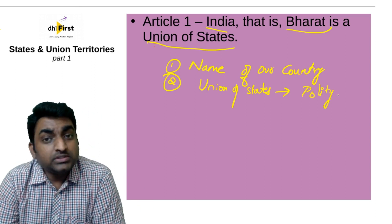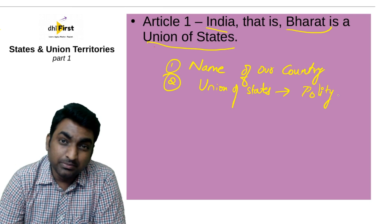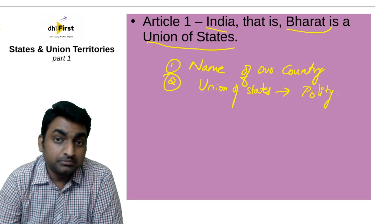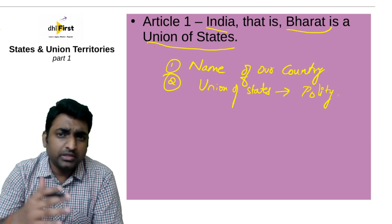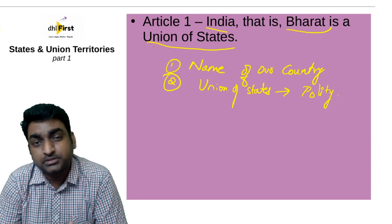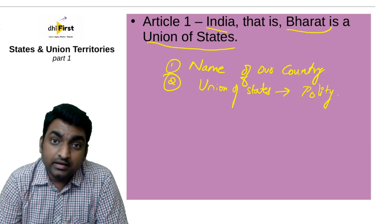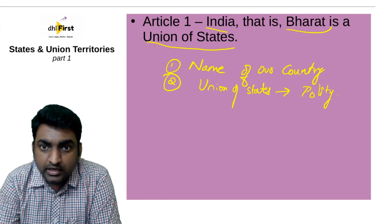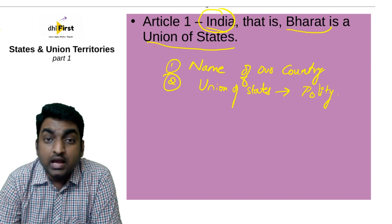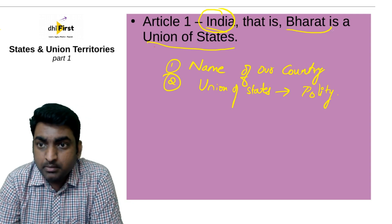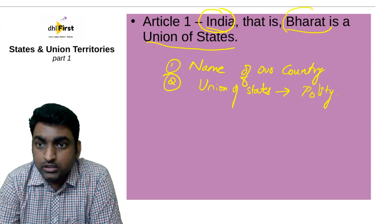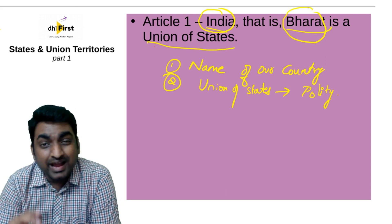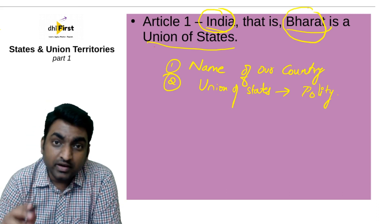There was a debate in the Constituent Assembly about what the name of our country should be. Some people said Jambu Dweep; others had their own traditional names. But finally, it was decided that we should have both the modern name India and the traditional name Bharat. So officially, both India and Bharat are the names of our country.